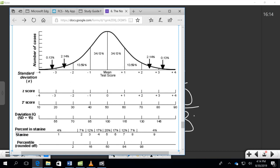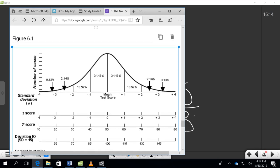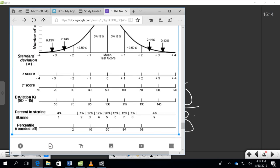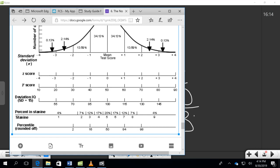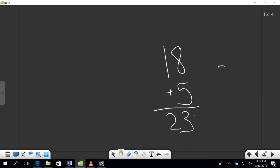which is one standard deviation or percentile point above. And when I follow this down, rounded off percentile is going to bring me to 84%. So she is in the 84th percentile.